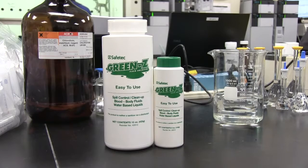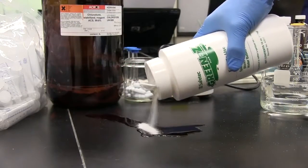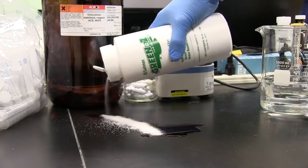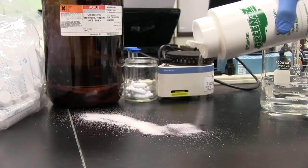Once a blood, bodily fluid, or chemical spill occurs, sprinkle the Green Z powder to first surround the spill and then evenly distribute over the contained fluid while wearing the appropriate protective clothing.